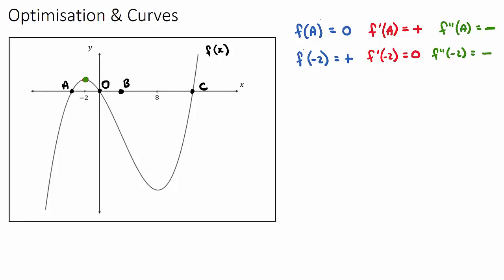Hopefully you can see the pattern. f(0): when x is 0 at the origin, the y-value will also be 0. f'(0): this is going to be the slope at the origin, and it's going to be sloping down, so this will be negative. And the double derivative — concavity — at 0: this will still be part of the negative concavity section, so it will have a concavity which is negative.